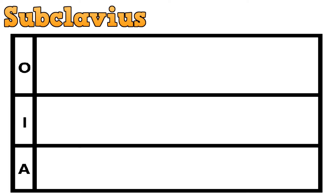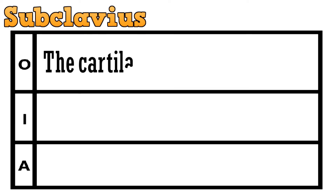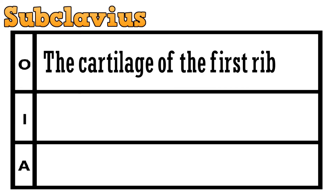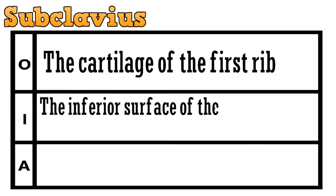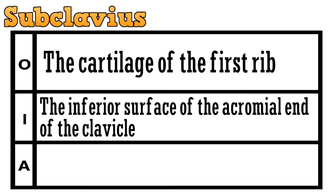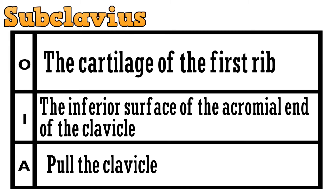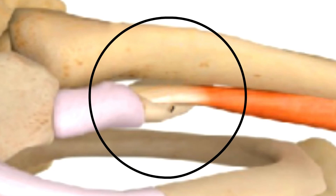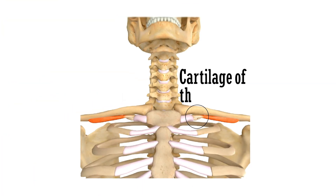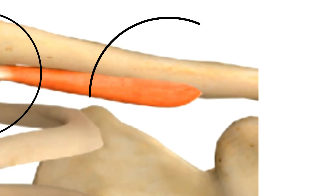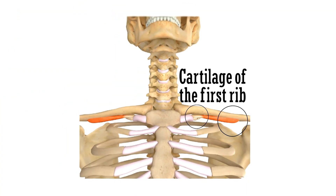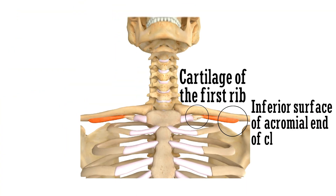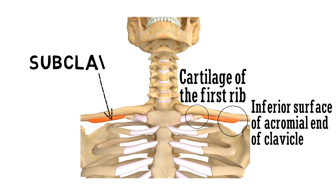The last muscle in this group is subclavius. It originates from the cartilage of the first rib and gets inserted to the inferior surface of the acromial end of the clavicle. The action of the muscle is to pull the clavicle down and medially. As you can see, the origin is the cartilage of the first rib, and the insertion is the inferior surface of the acromial end of the clavicle.